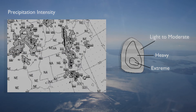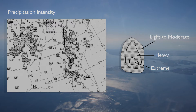Precipitation intensity is shown in three contours. The first contour indicates light to moderate precipitation. A second contour indicates the presence of heavy precipitation. This area may also contain small hail granules.